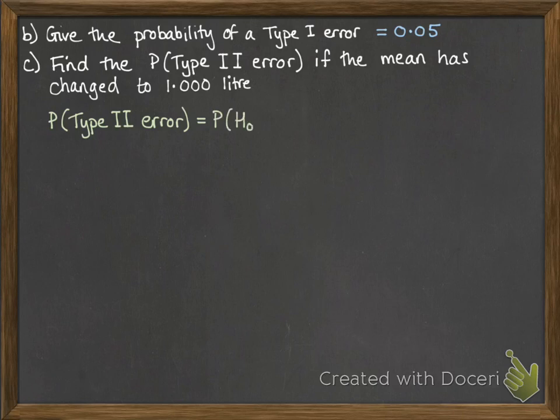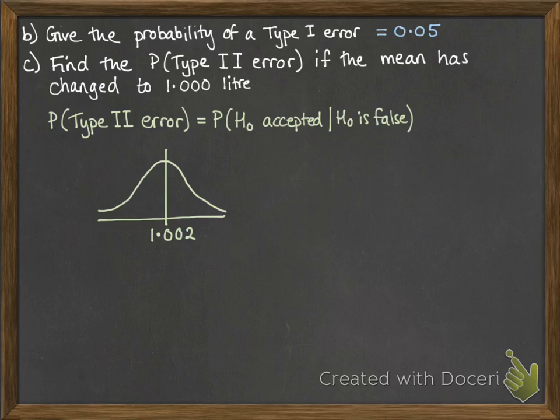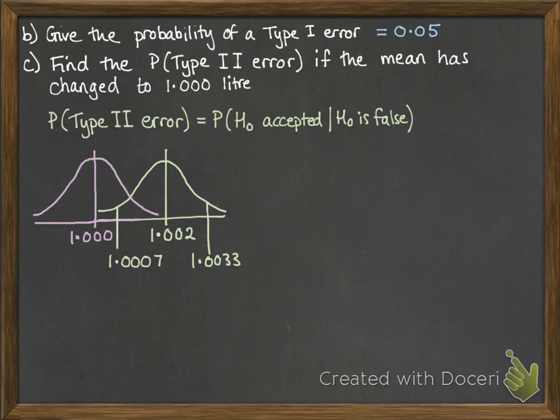So this is the probability that our null hypothesis was accepted given that H0 was false. So we actually have a mean... Well, we had a mean to start with of 1.002, but the real mean is 1.000. OK, so we've got these two different distributions. So here we've got the values that would have been accepted on H0. Those are the parts we worked out on part A.